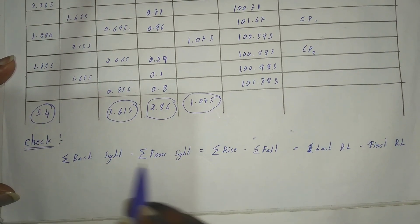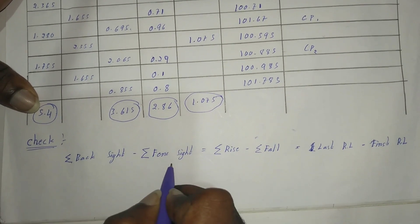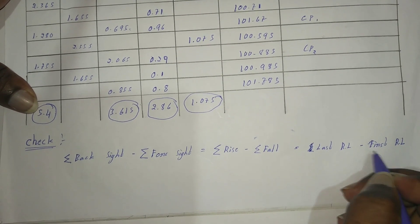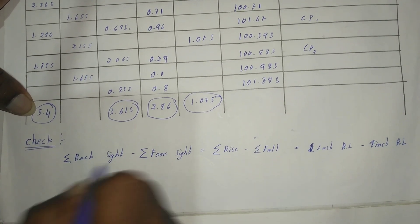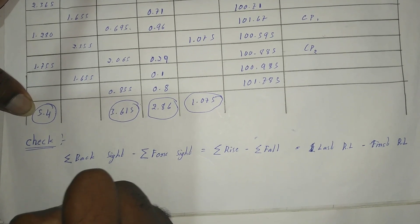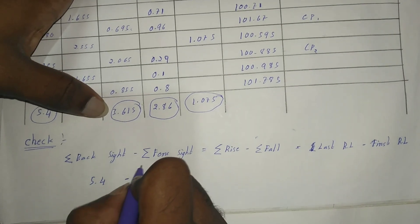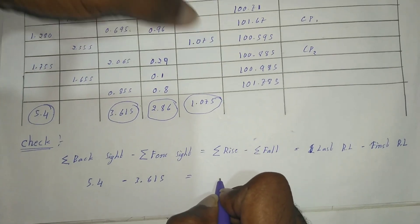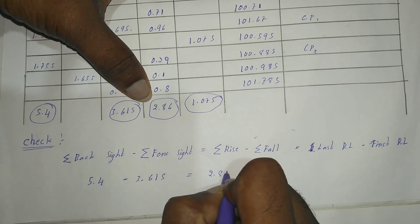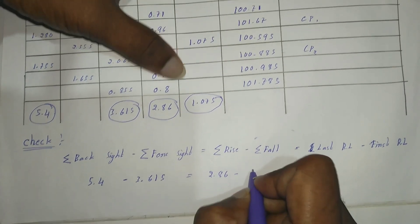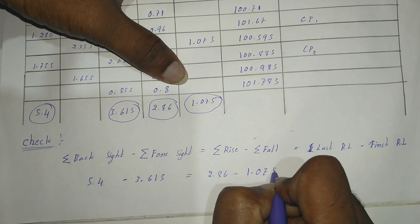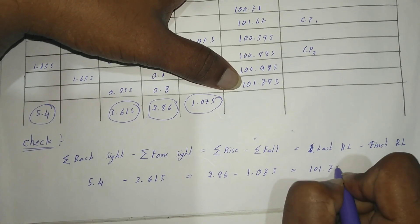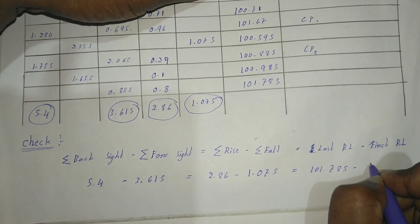Check for rise and fall method is: sigma backside minus sigma foreside equals sigma rise minus sigma fall equals last RL minus first RL. That equals 1.775. Then sigma backside equals 5.4 minus sigma foreside equals 3.715. Sigma rise is 2.86, sigma fall is 1.075. Last RL is 1.775 minus first RL is 100.